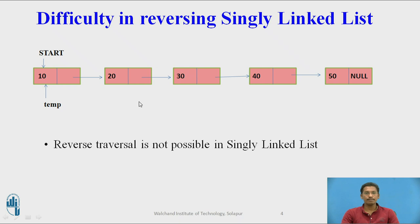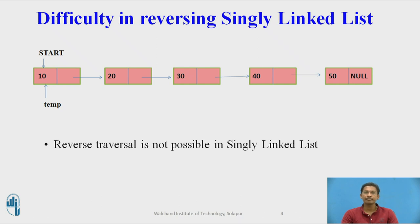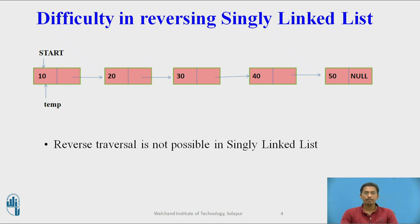Now, the difficulty in reversing a singly linked list. In a singly linked list, there is only one pointer which points to the next node, so traversal is possible only in the forward direction. Reverse direction traversal is not possible with a singly linked list, unlike a doubly linked list where traversal in both directions is possible. So reversing a singly linked list is more difficult compared to reversing a doubly linked list.